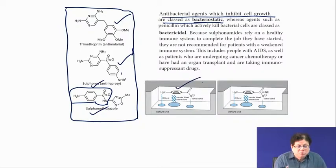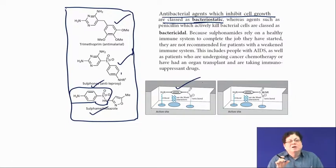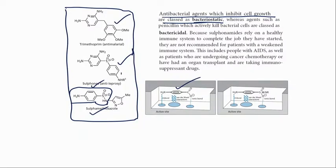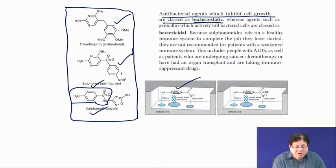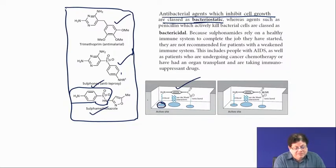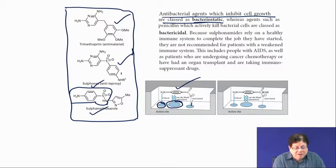Para-aminobenzoic acid has to be incorporated into a dihydropteridine nucleus. That reacts with para-aminobenzoic acid and the enzyme that does that is called pteridine synthase. This synthase must have a hydrogen bond at the active site — the NH2 forms a hydrogen bond with some amino acid, there is an aromatic amino acid for pi-stacking with the benzene ring, and there must be some ionic interactions, such as NH3+ forming an electrostatic interaction.